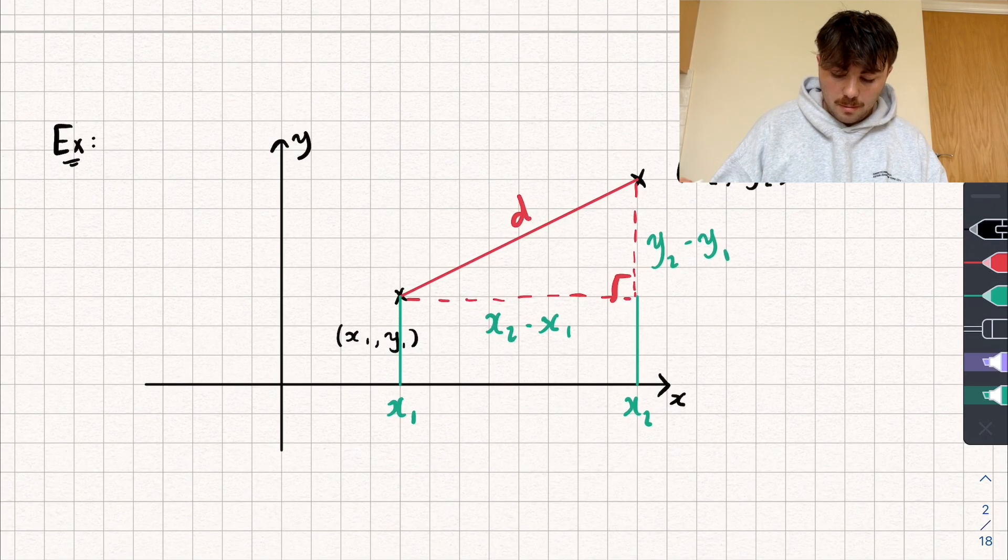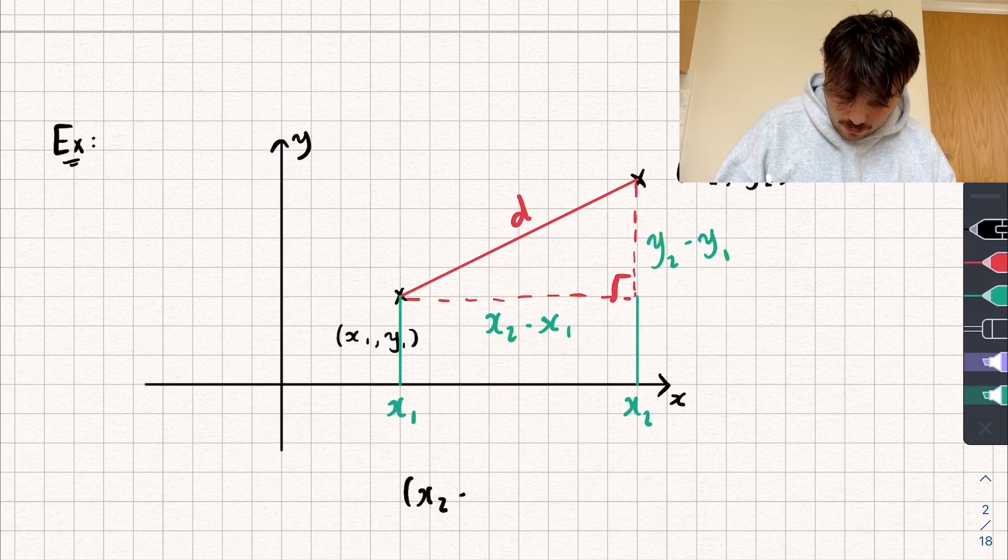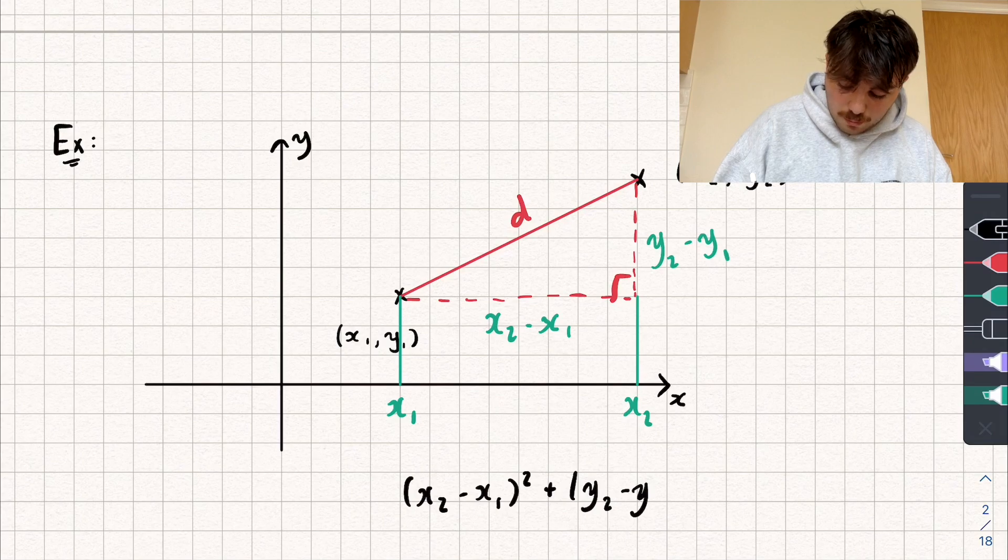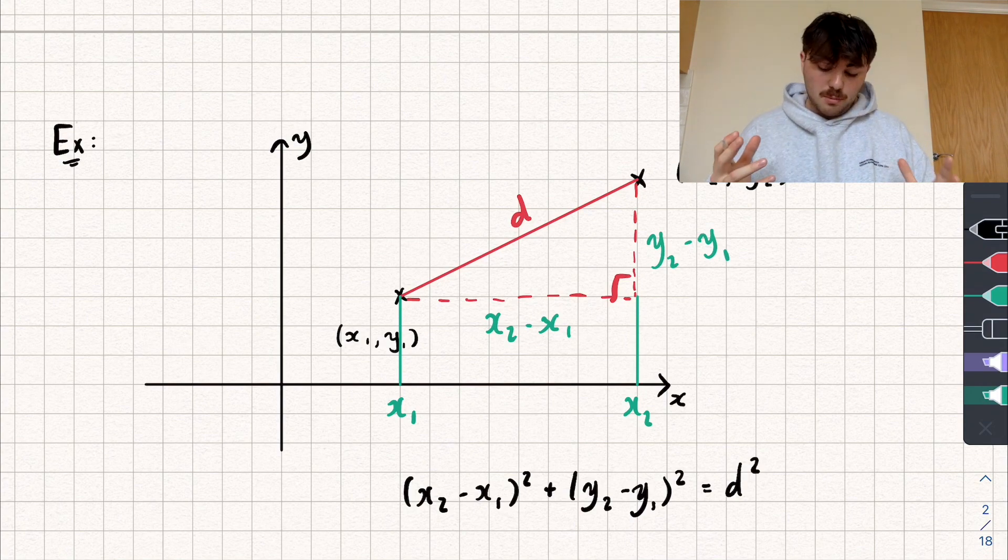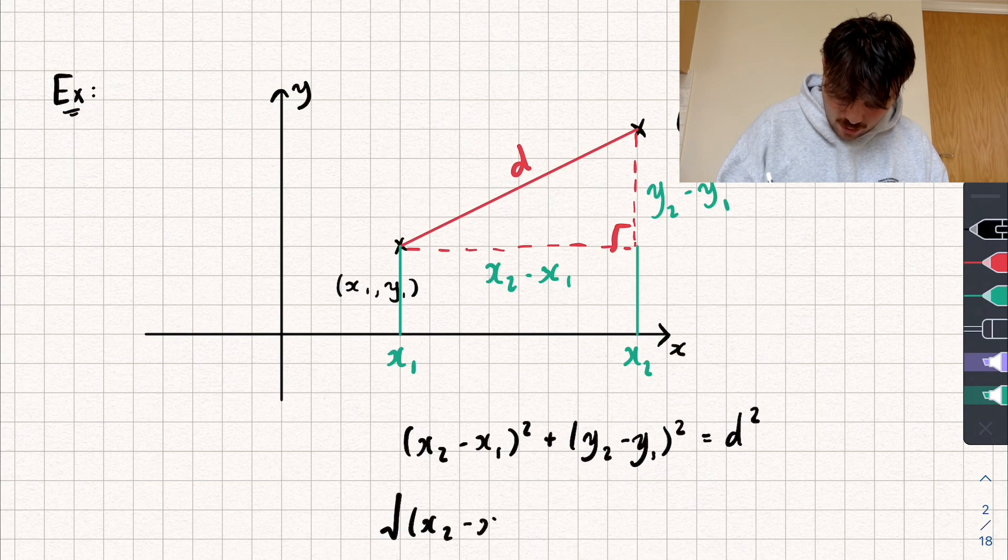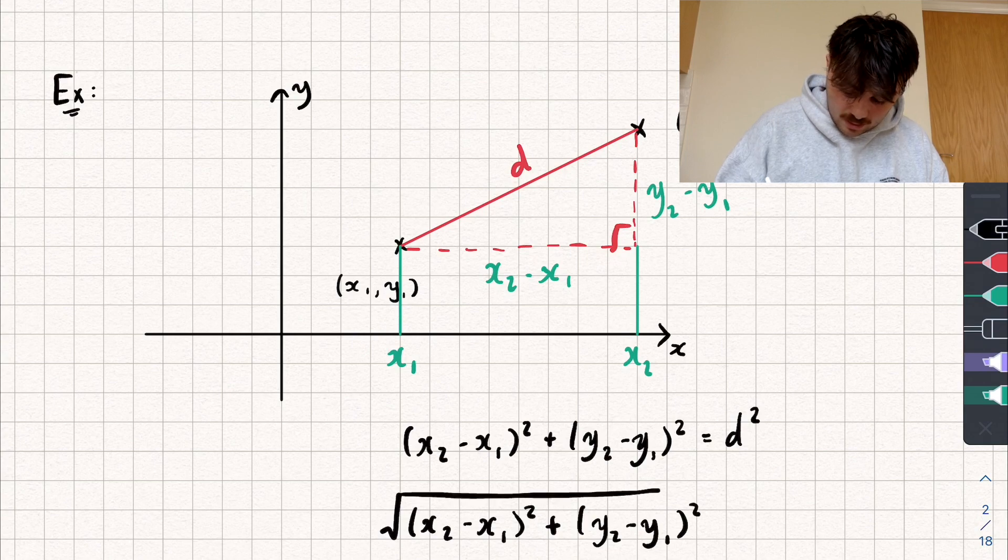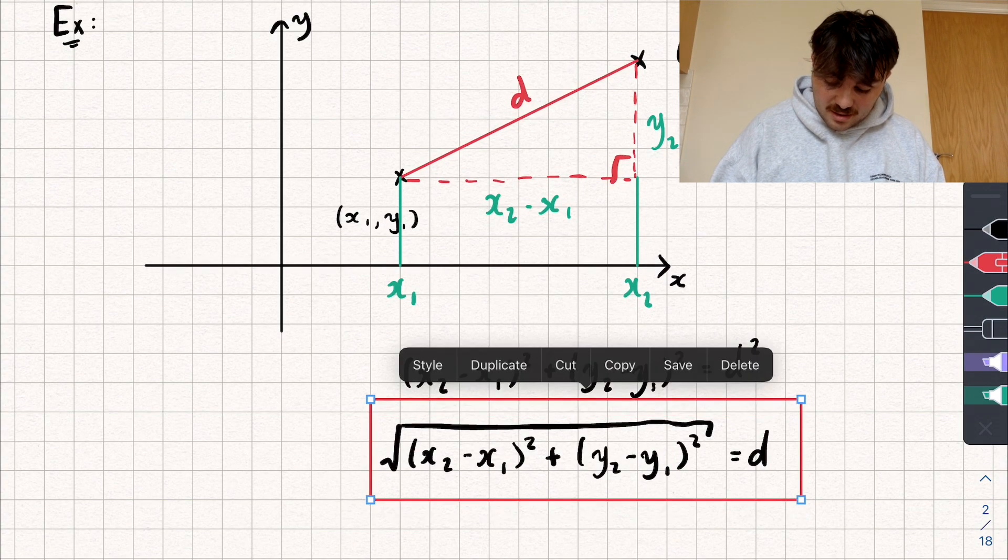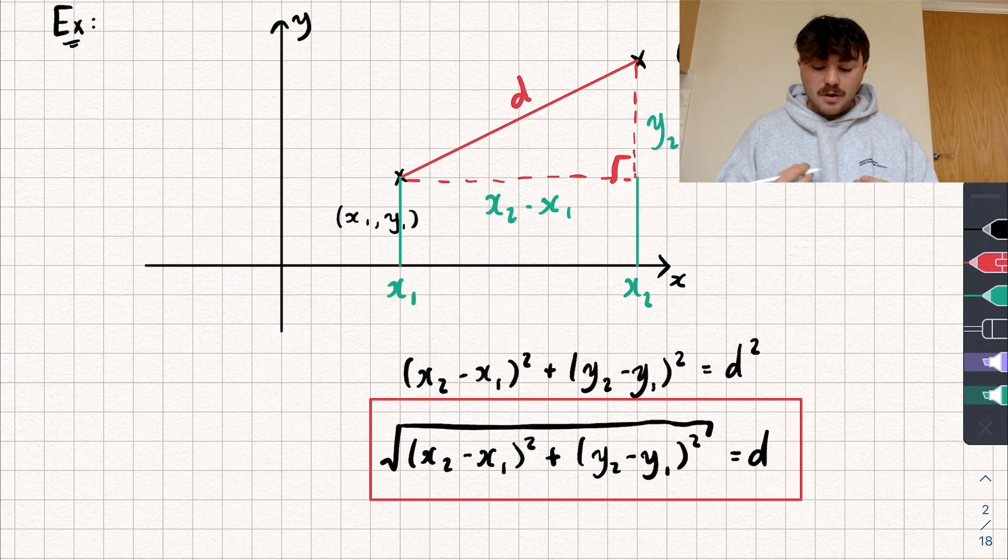So now let's just do the process we did before. So I'm going to do my (x2 - x1)² plus (y2 - y1)² and say that's equal to my missing side, d squared, which is the distance between my two points. Now I'm going to square root both sides. And we get the square root of (x2 - x1)² plus (y2 - y1)² is equal to the distance between our two points. And this is the formula. This is the formula that we can use to find the distance between two coordinates. And hopefully it makes sense where it's coming from.